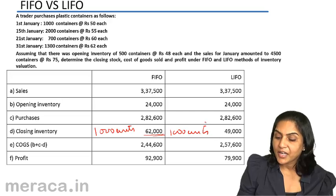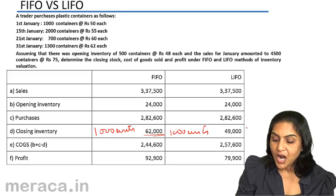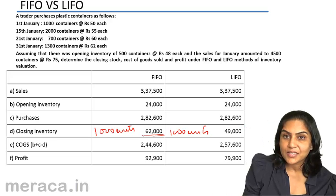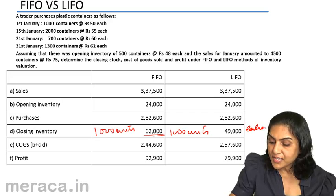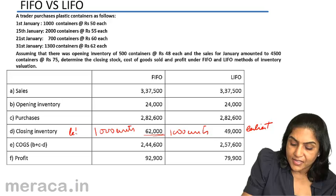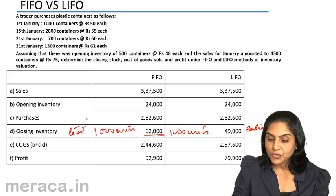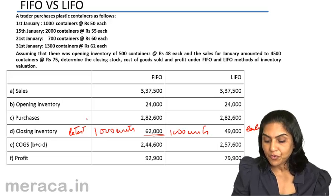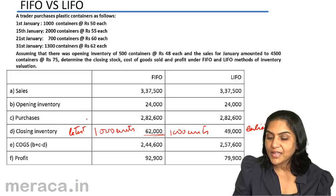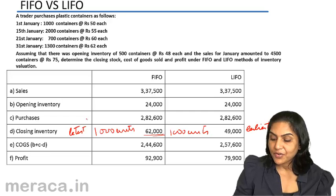This is because under LIFO the closing stock consisted of the earliest inventories, while under FIFO they consisted of the latest inventories. This is the earliest under LIFO and the latest under FIFO. The cost of goods sold is 2,44,600 under FIFO, which is lower than under LIFO, which was 2,57,600.